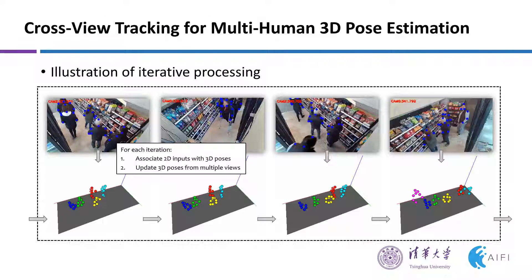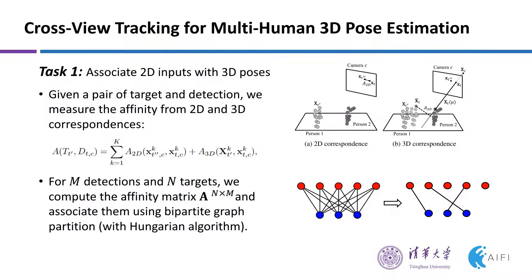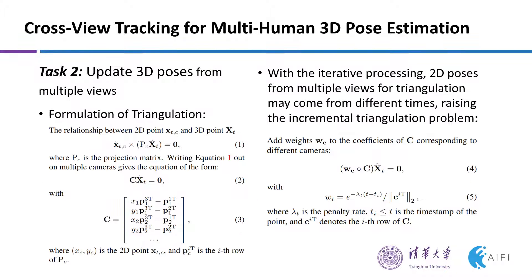The computational cost of 3D pose estimation can be significantly reduced by integrating with the cross-view tracking and iterative processing. For each iteration, the first task is to associate 2D inputs with 3D poses. After that, the second task is to update the 3D poses of targets.